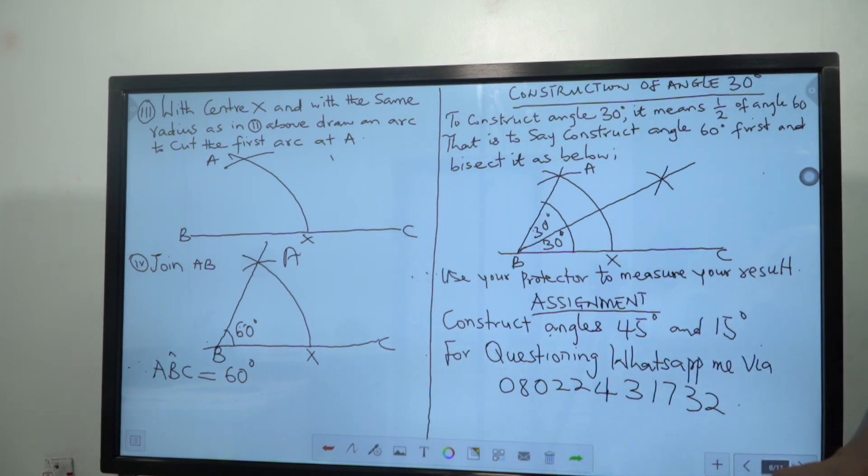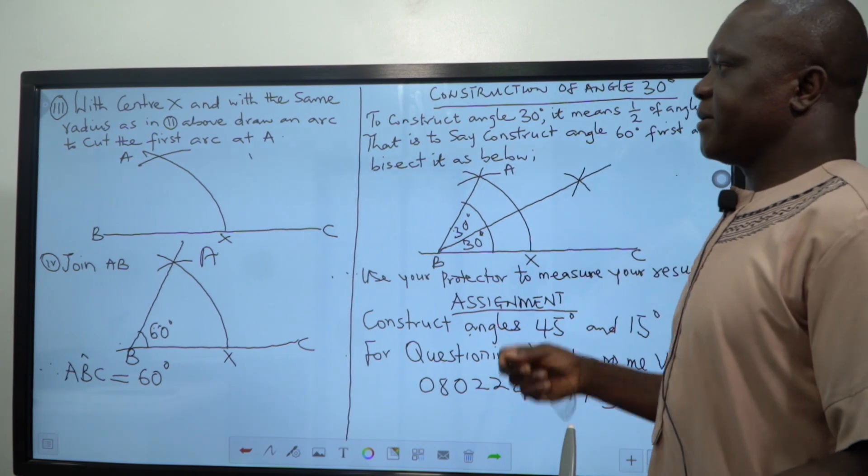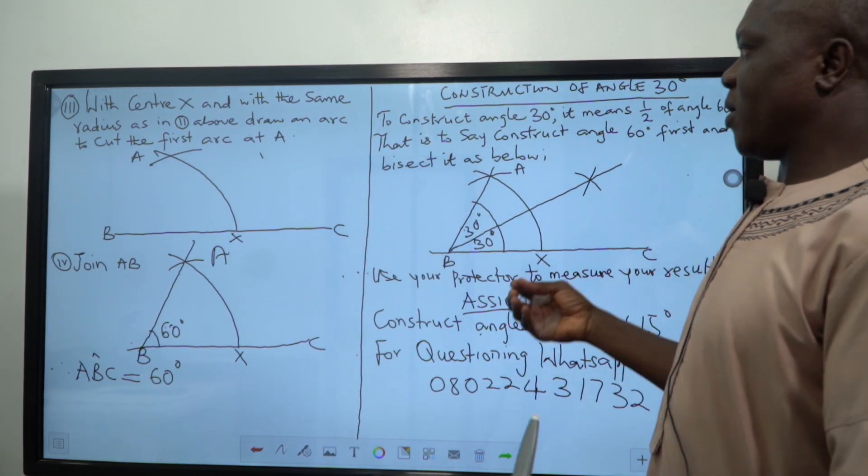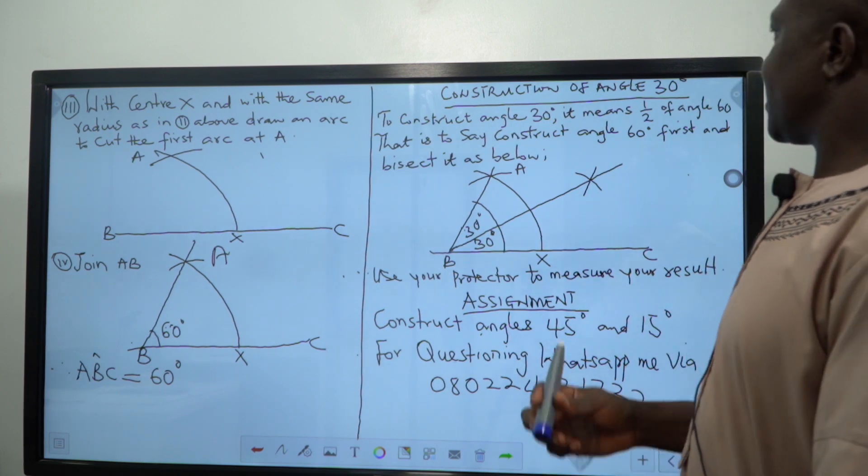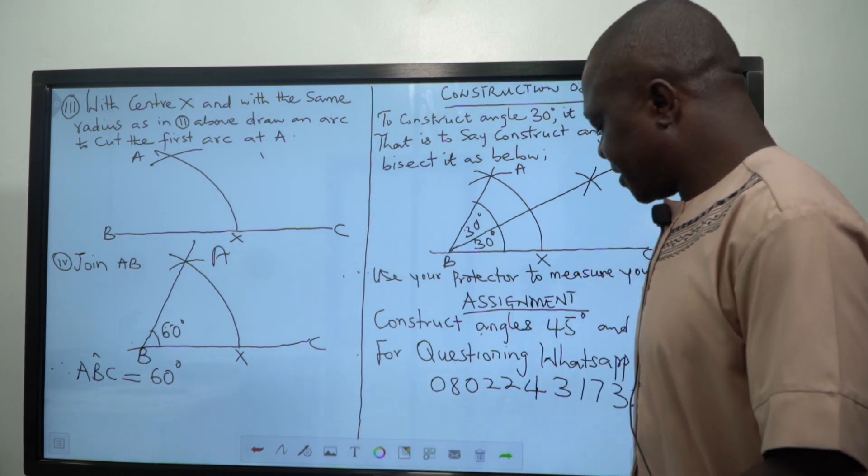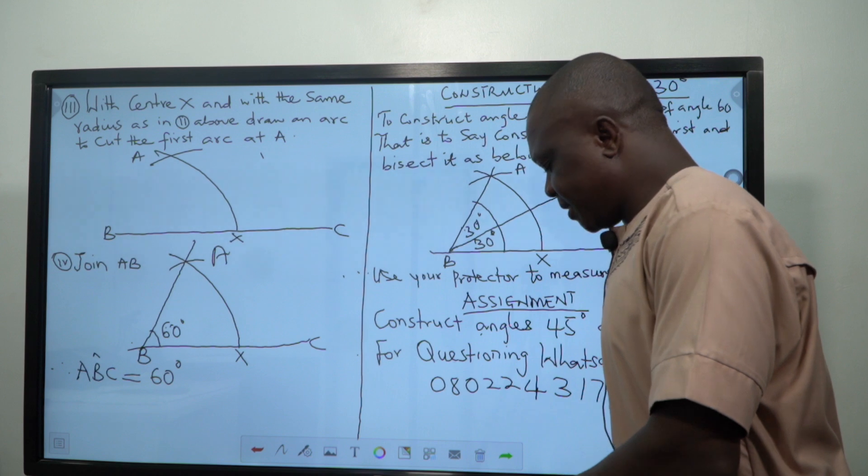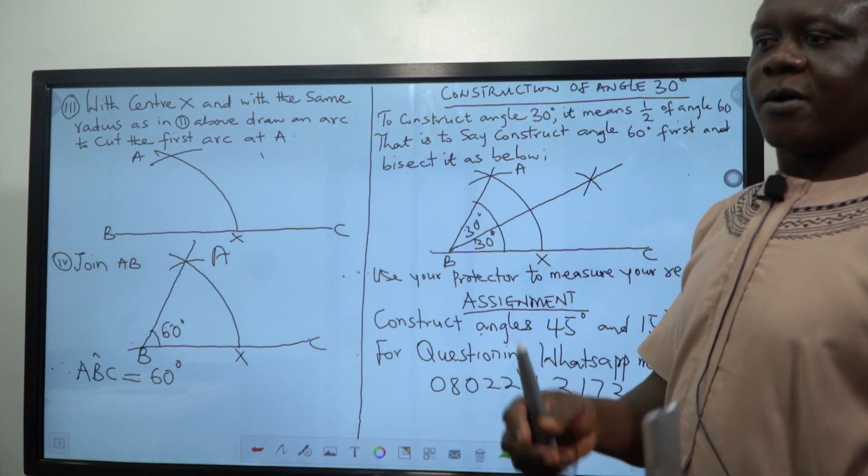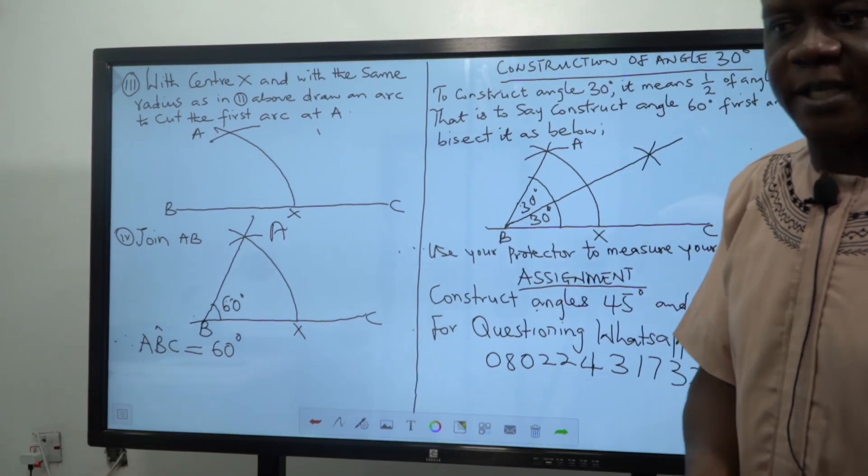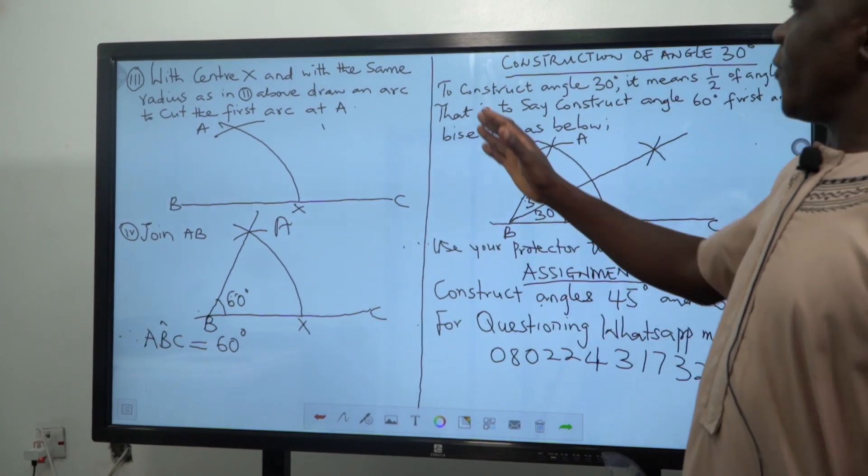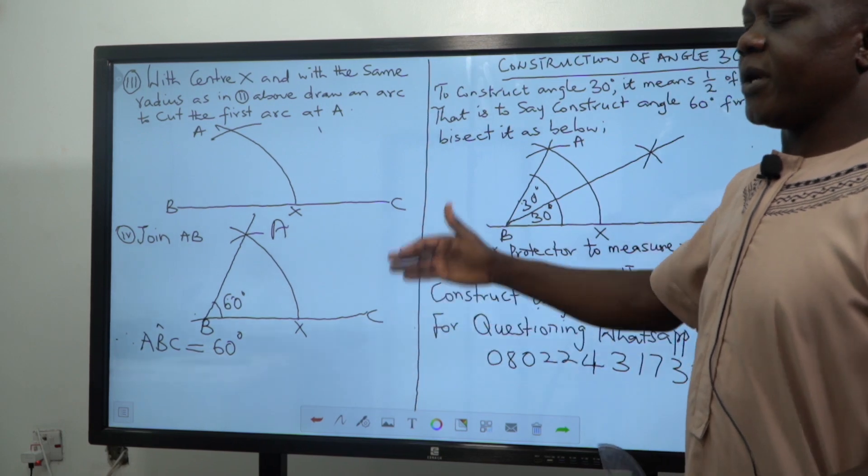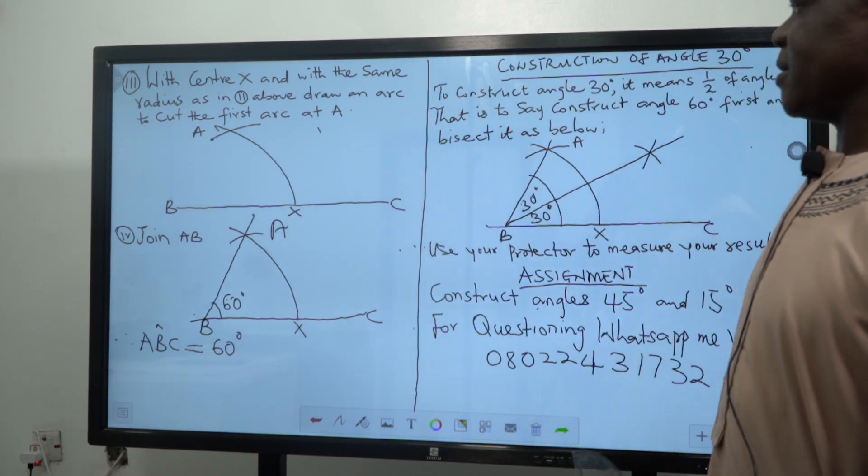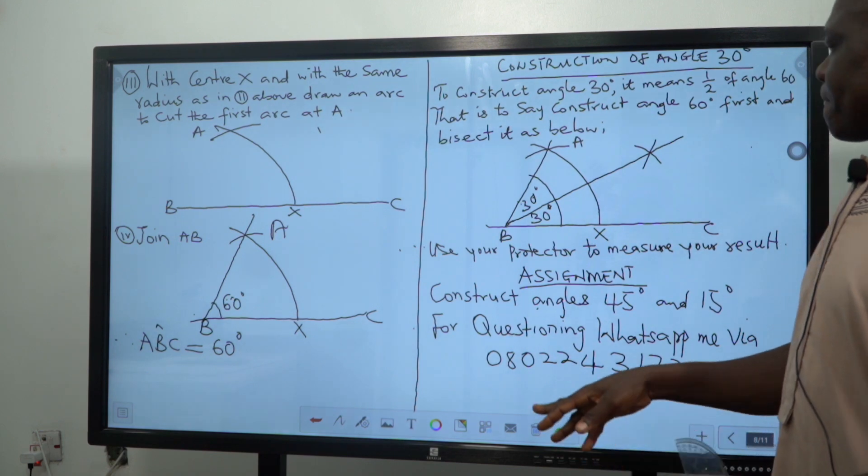Then to construct angle 90 of angle 30 degrees, sorry, is the same thing as what we talked in angle 45, because 30 is the half of 60 degrees. There is no way you can construct angle 30 without constructing angle 60 first.